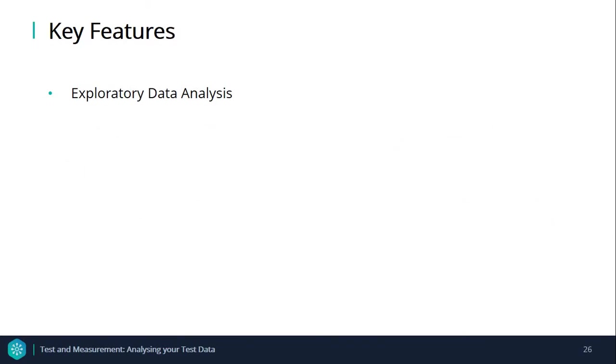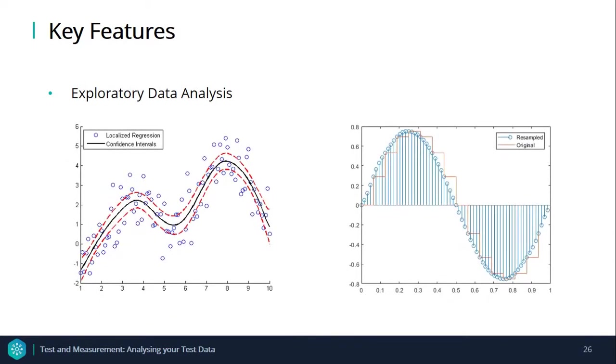In some cases, performing inference on summary statistics using parametric methods is not possible. There are various resampling techniques that can be used that come with the Stats and Machine Learning Toolbox, such as non-parametric bootstrap, jackknife, and bootstrap confidence interval.